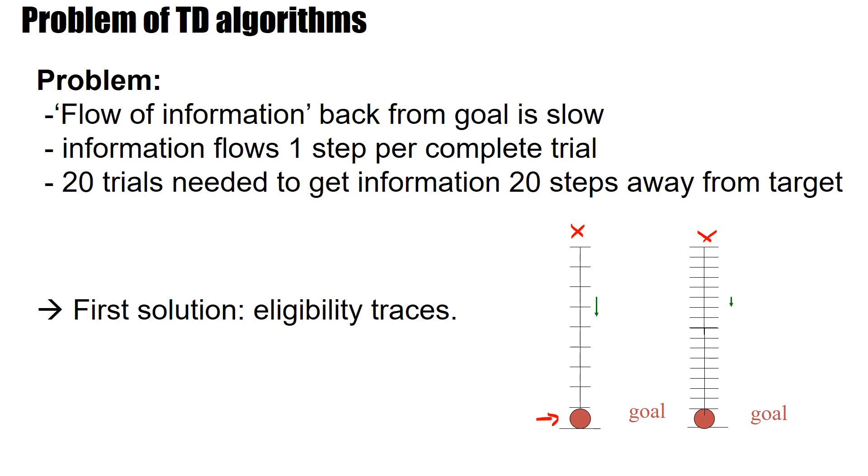The first solution we saw is you work with eligibility traces. However, there's also a second solution and this solution is called n-step temporal difference methods or TD methods. And that's what I will discuss in this video.